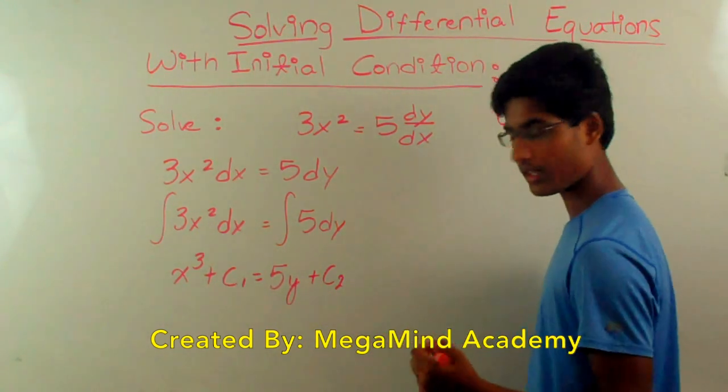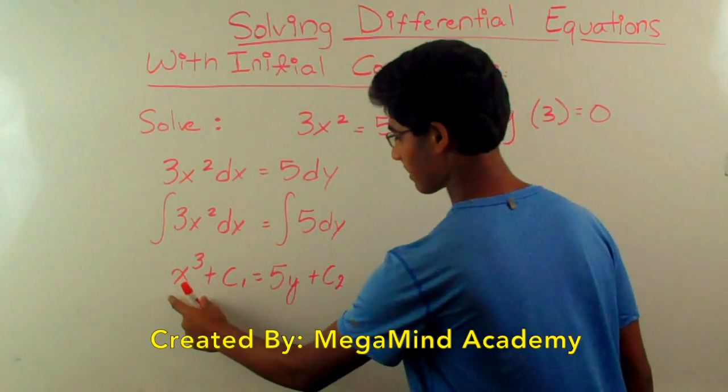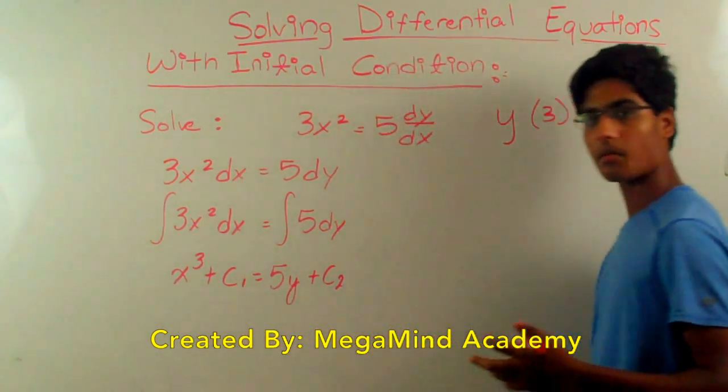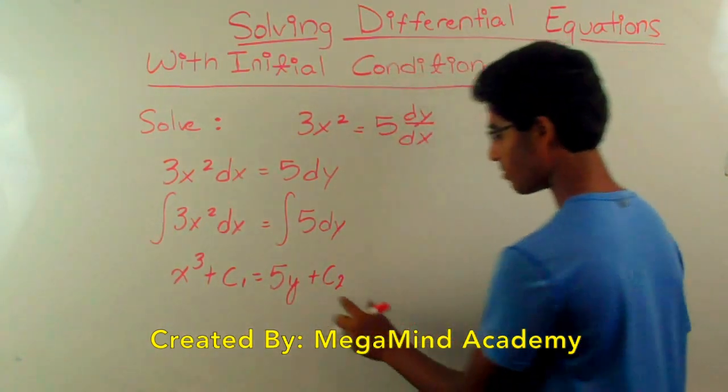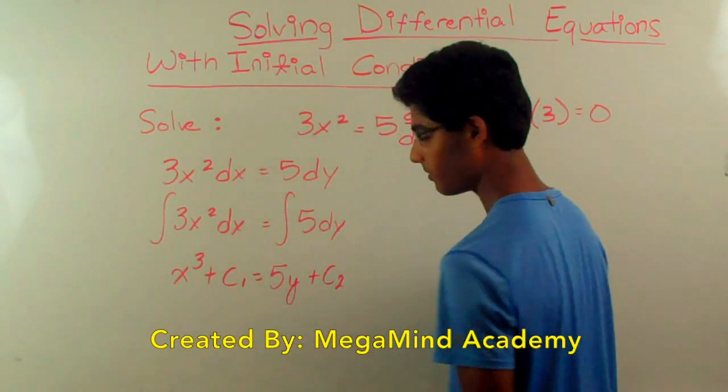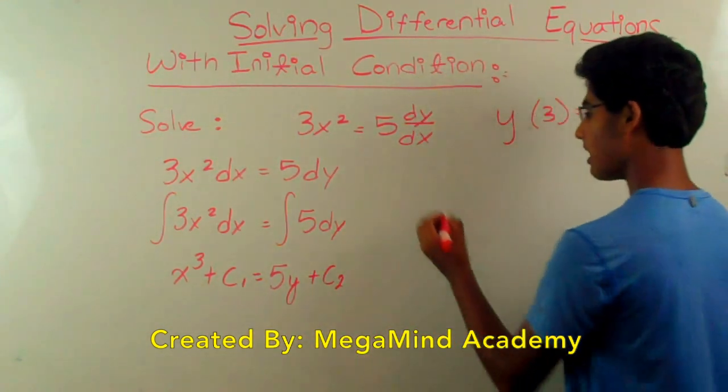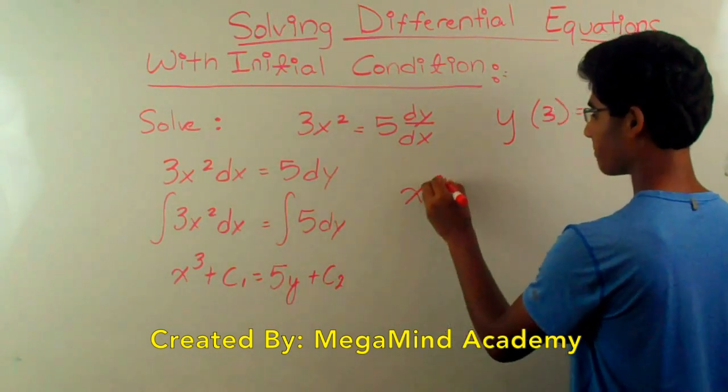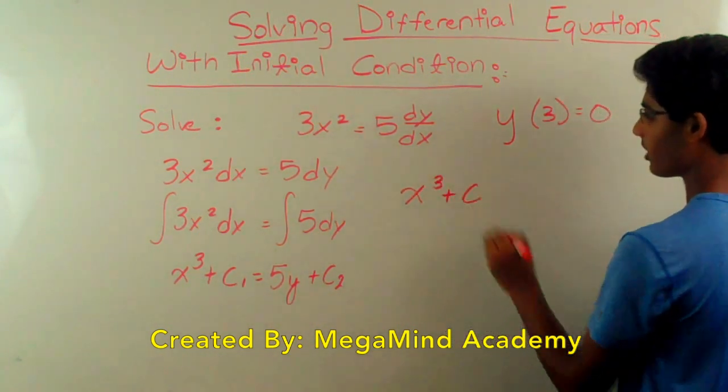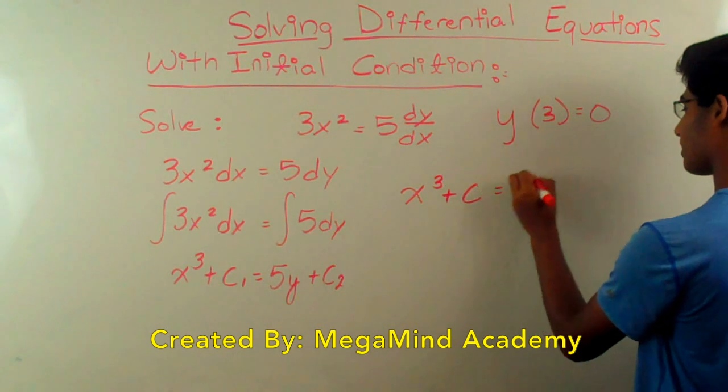So instead of doing it that way, we've always seen some function in terms of x plus the arbitrary constant. So let's subtract c2 from c1. It doesn't really matter. And we're going to get x cubed plus the arbitrary constant is equal to 5y.